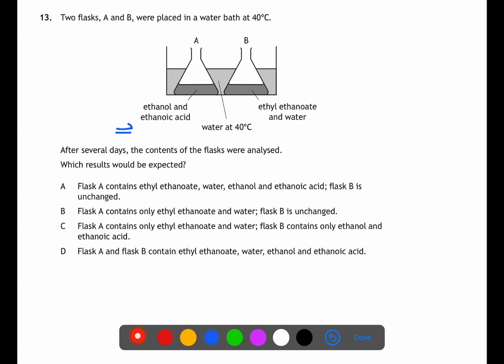The ethanol and ethanoic acid in flask A will combine to produce ethyl ethanoate and water. This is a reversible equilibrium reaction.